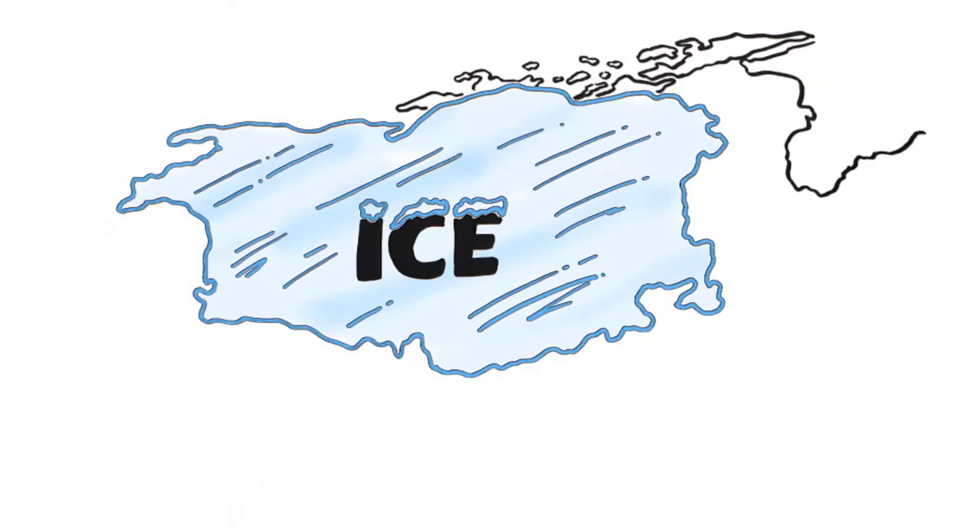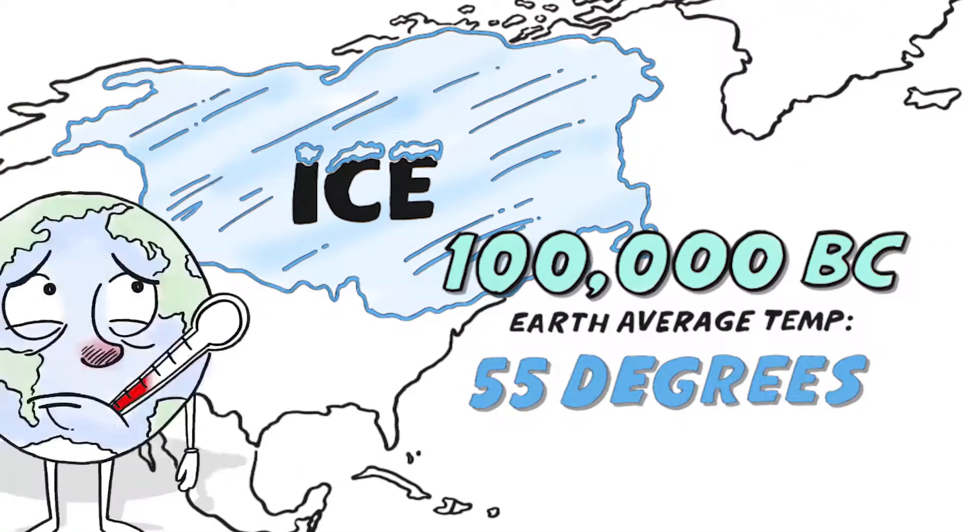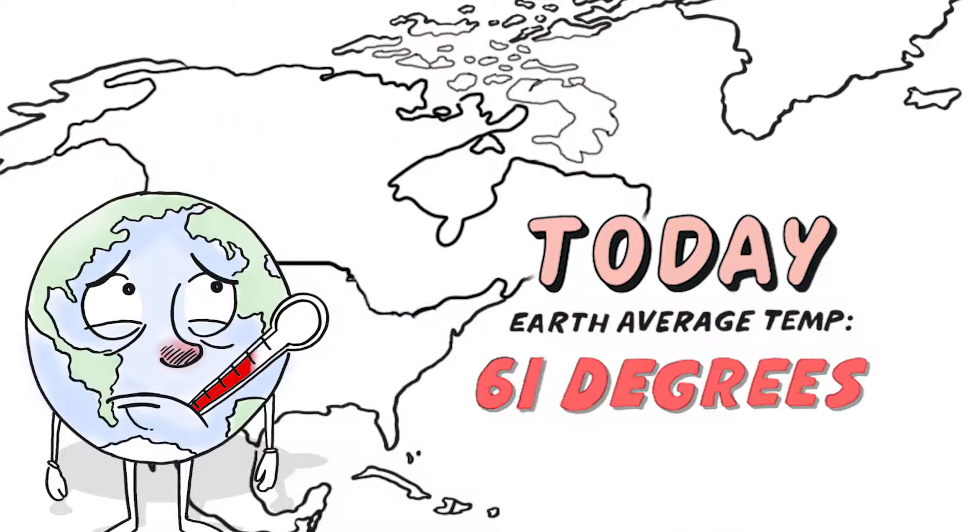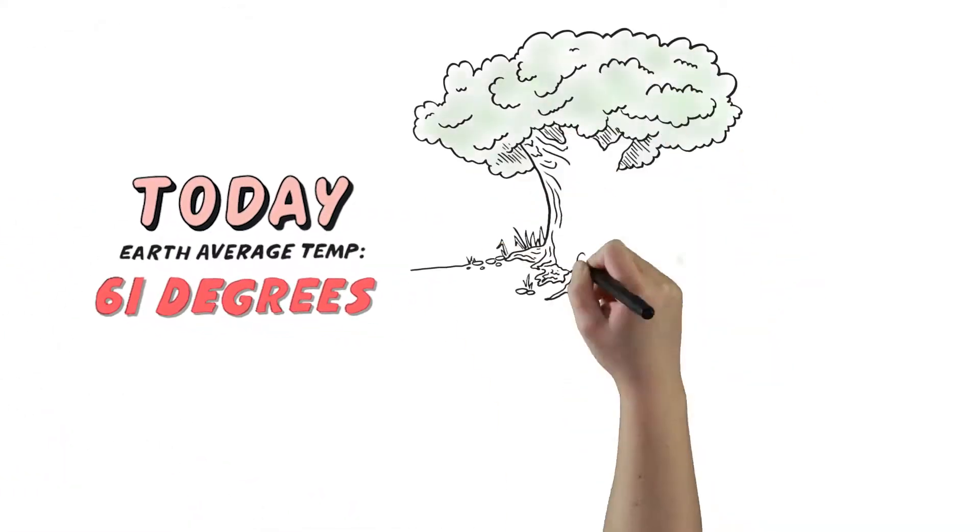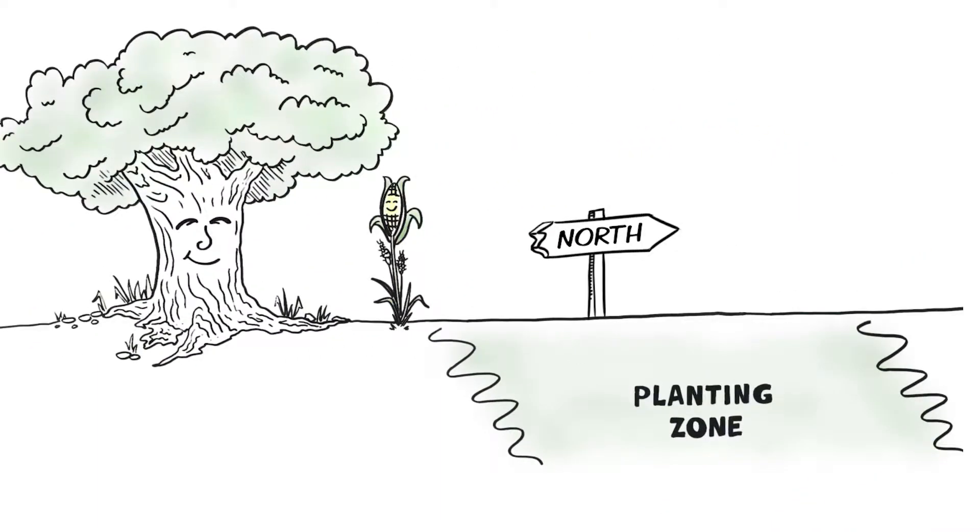When ice sheets covered the Northeast and Midwest almost down to the Ohio River, the Earth was only about six degrees cooler than it is today. These days, planting zones are moving quickly north, but plants and trees cannot move as quickly.